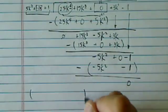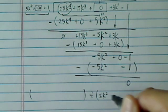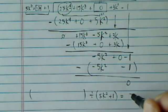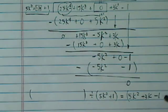Obviously, what we have then is this big long thing divided by 5k squared plus 1, and the final answer is equal to 5k squared plus 3k minus 1.